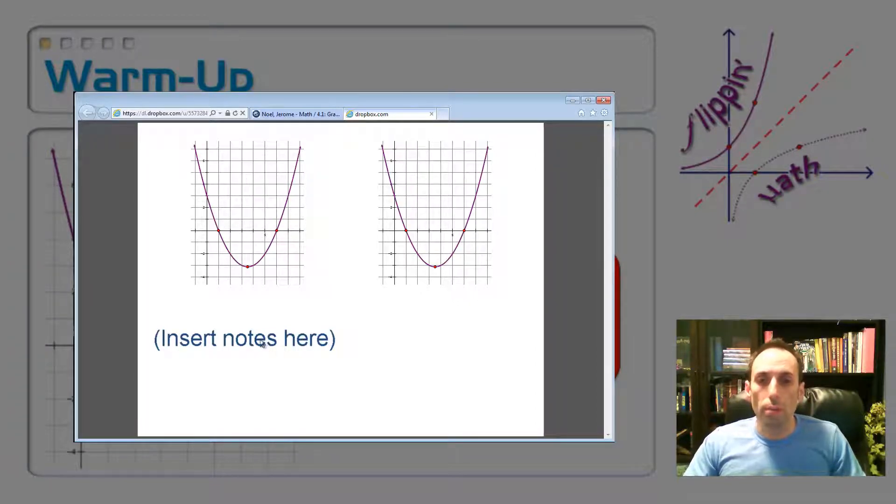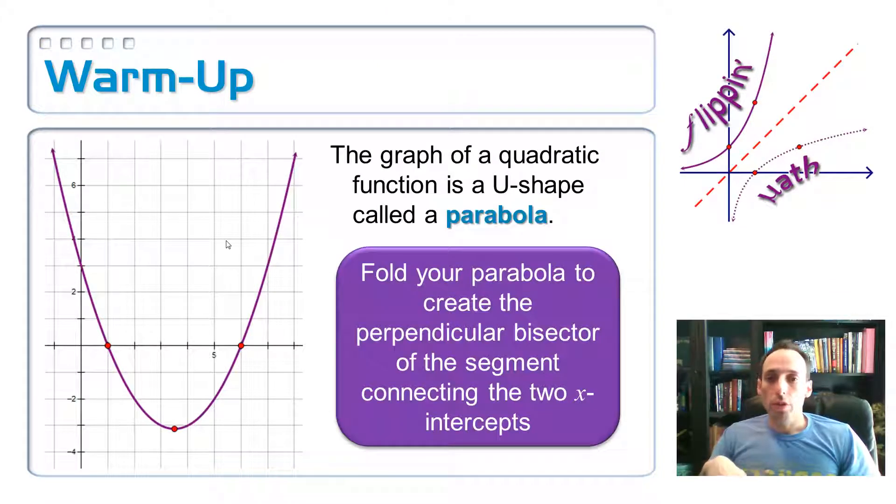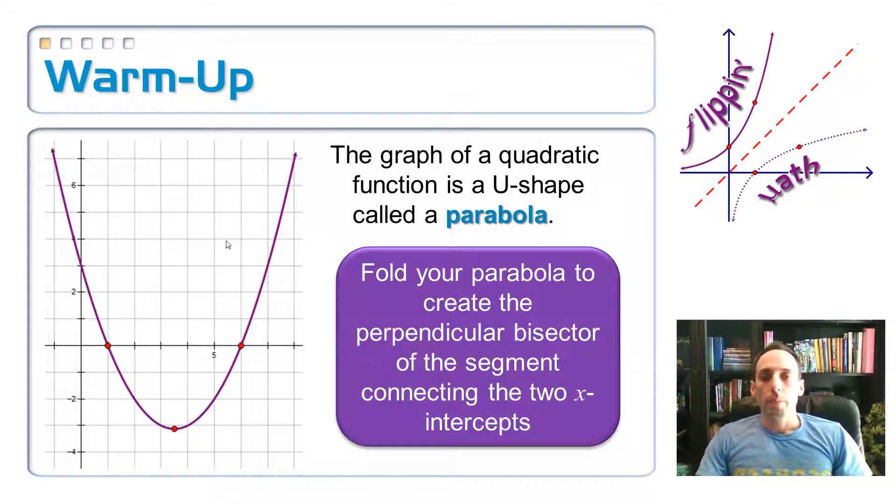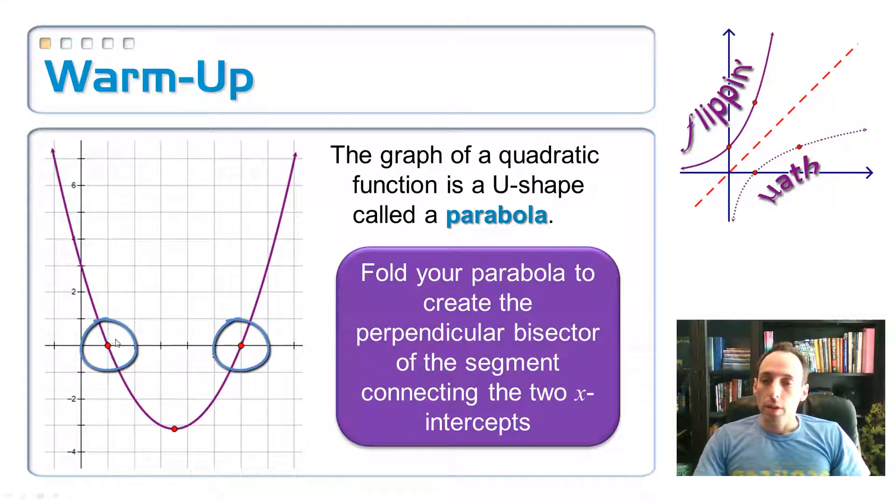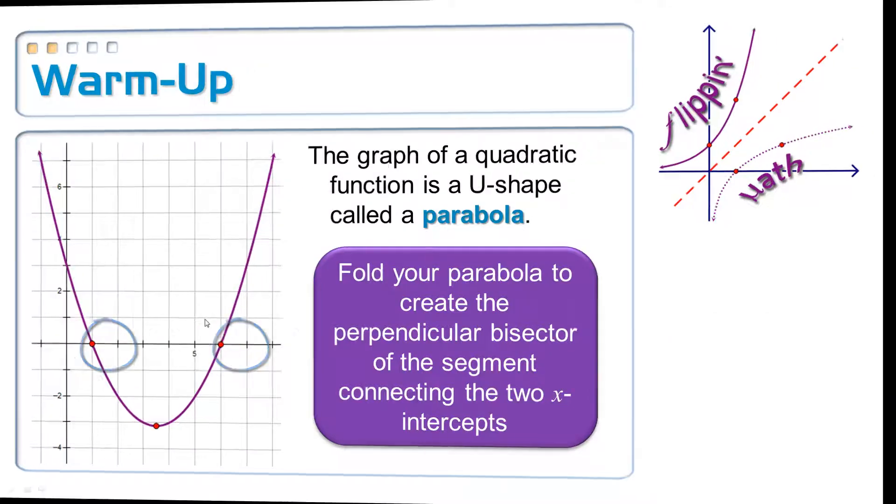Okay, so now what I want you to do is do what I did at the opening activity, and that was to create yourself a perpendicular bisector. The two points that you're going to fold on top of each other are the two x-intercepts - this point and this point. So you're going to fold your parabola basically in half so that those two points coincide.